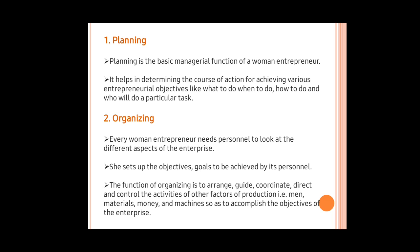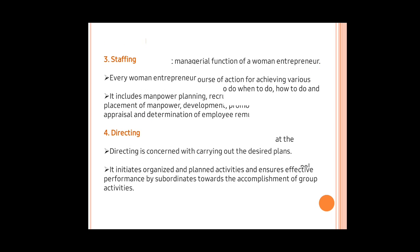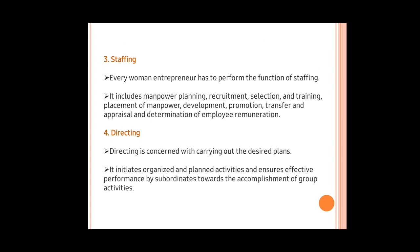The second function is organizing. Every woman entrepreneur needs personnel to look after the different aspects of the enterprise. She sets up objectives and goals to be achieved by its personnel. The function of organizing is to arrange, guide, coordinate, direct, and control the activities of other factors of production — that is, men, material, and money — so as to accomplish the objectives of the enterprise.